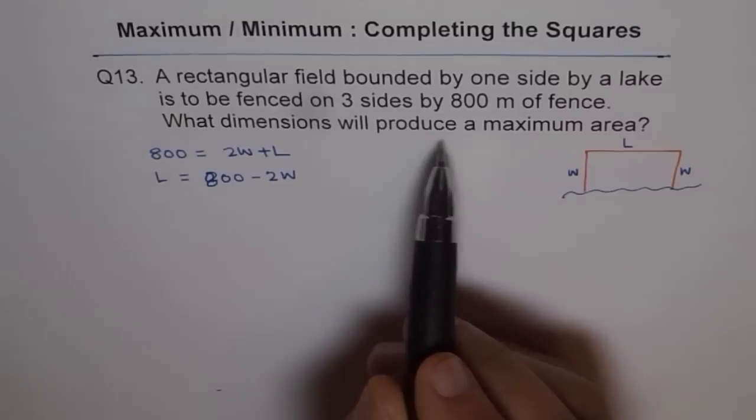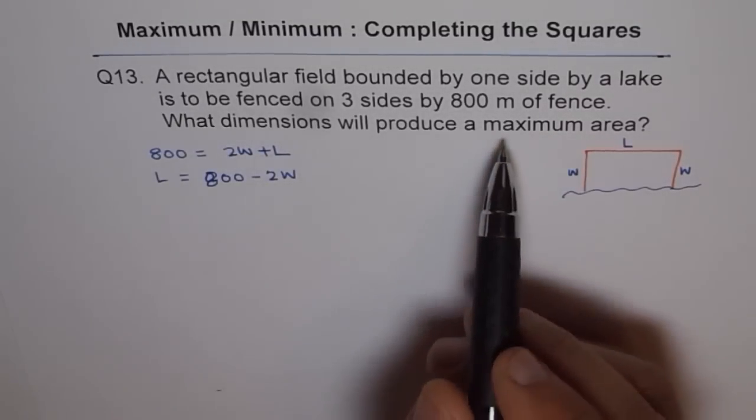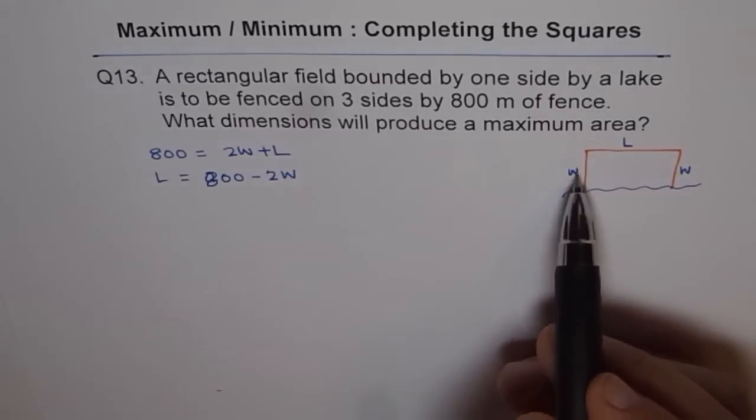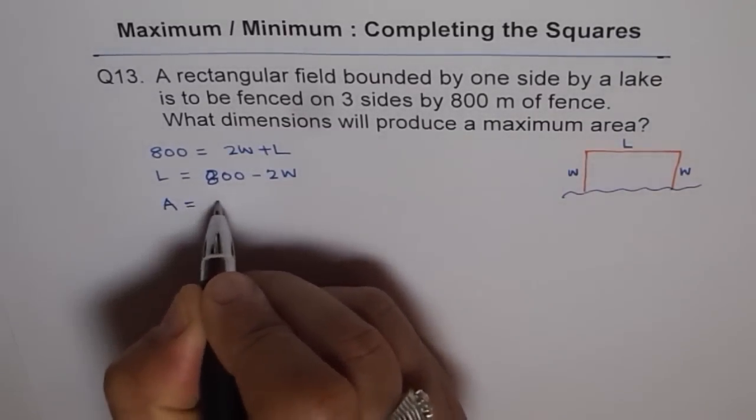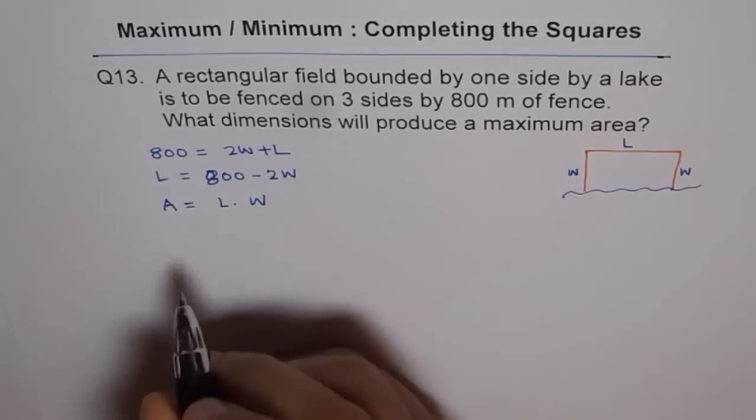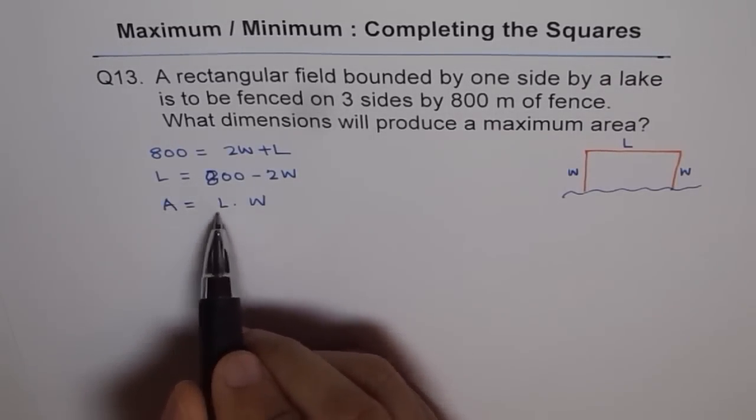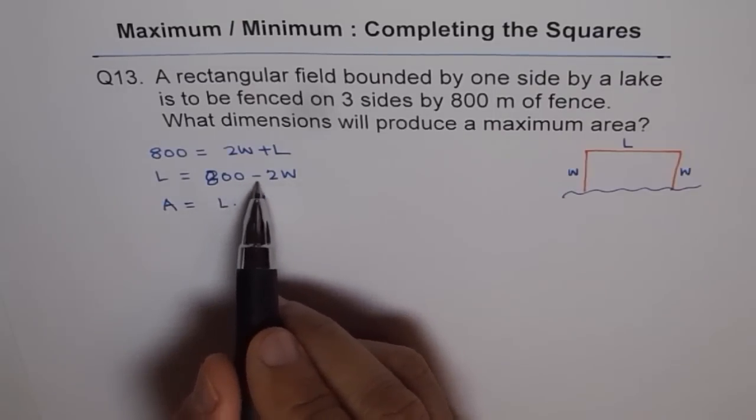So what dimensions will produce a maximum area? So we need to write formula for area. Rectangular area is length into width. So let's write it down. So area is length times width. Now this equation helps us to write area in one variable.